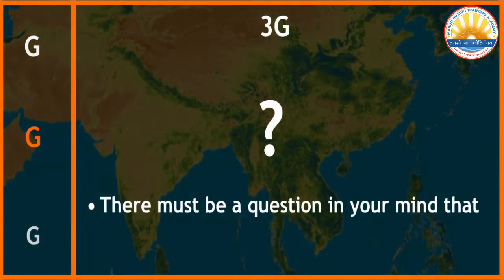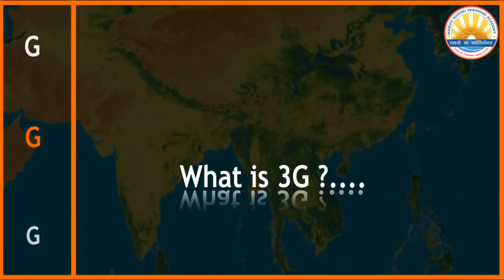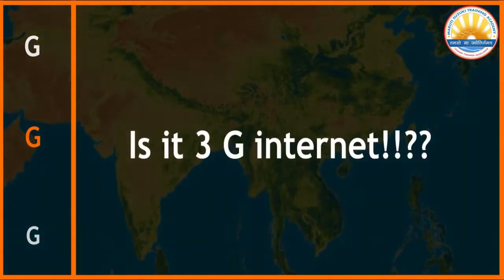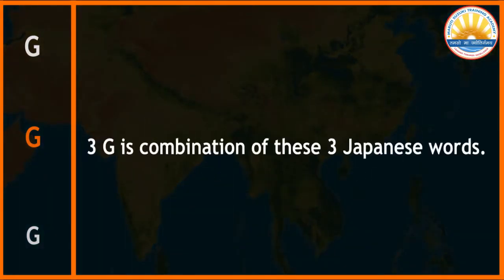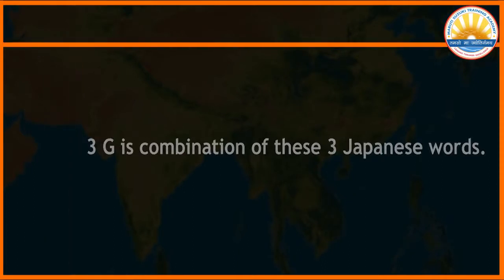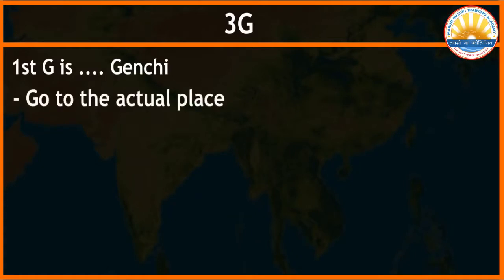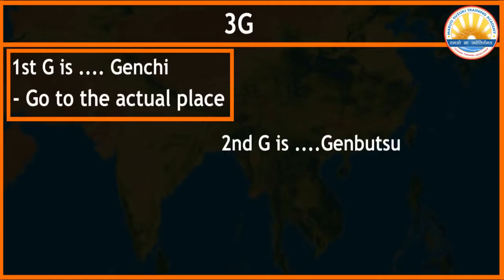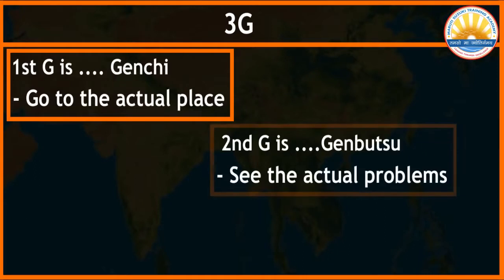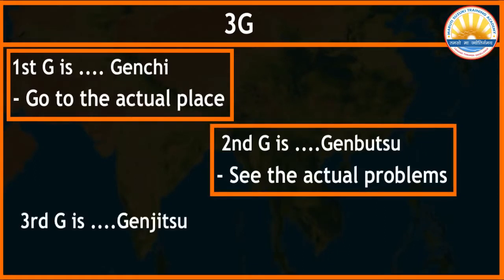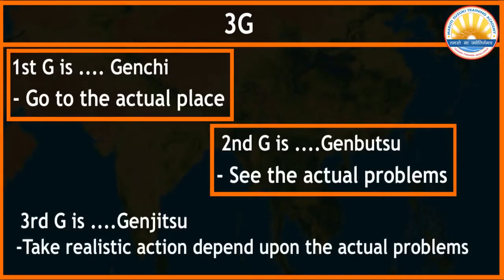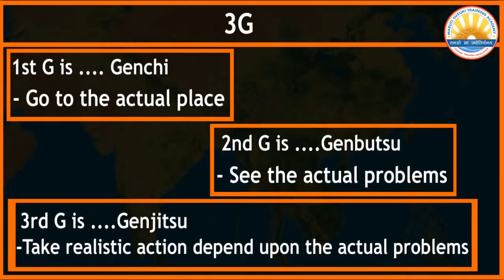There must be a question in your mind: what is 3G? It is not 3G internet. 3G is a combination of three Japanese words. The first G is Genchi, which means go to the actual place. The second G is Genbutsu, which means see the actual problems. The third G is Genjitsu, which means take realistic action based on the actual problems.